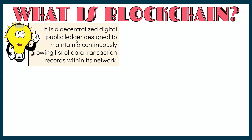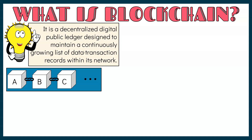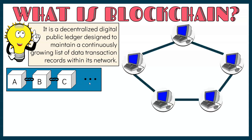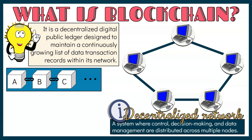Blockchain is a decentralized digital public ledger designed to maintain a continuously growing list of data transaction records within its network. Each transaction on a distributed ledger is verified through consensus, requiring approval from the majority of participants in the network. This happens on a decentralized network, where control, decision-making, and data management are distributed across multiple nodes.